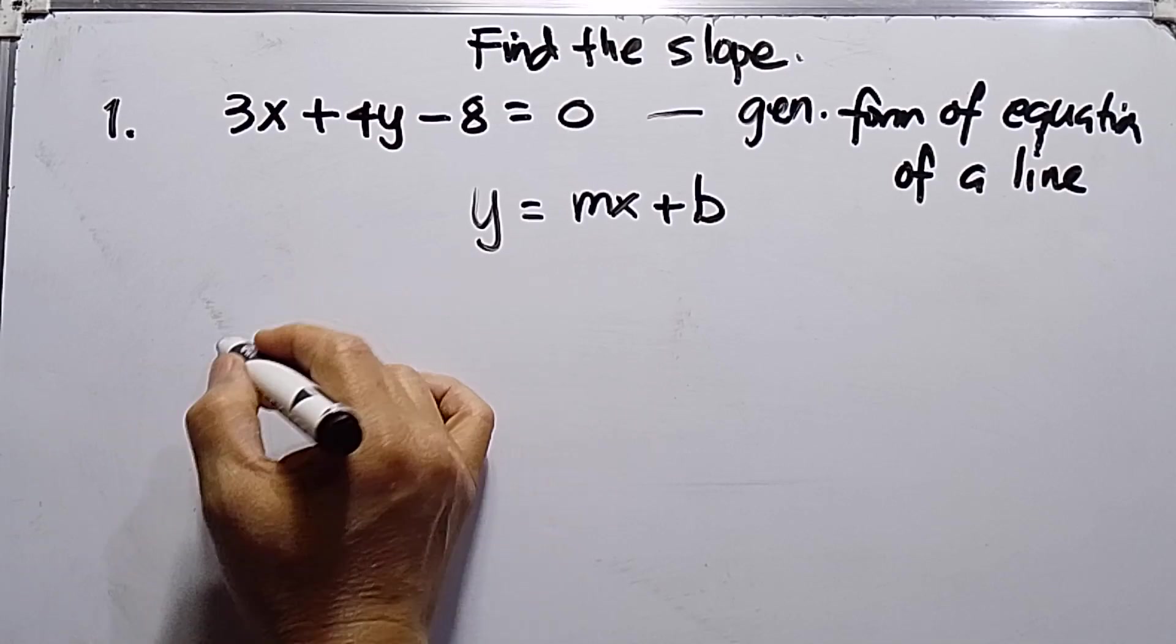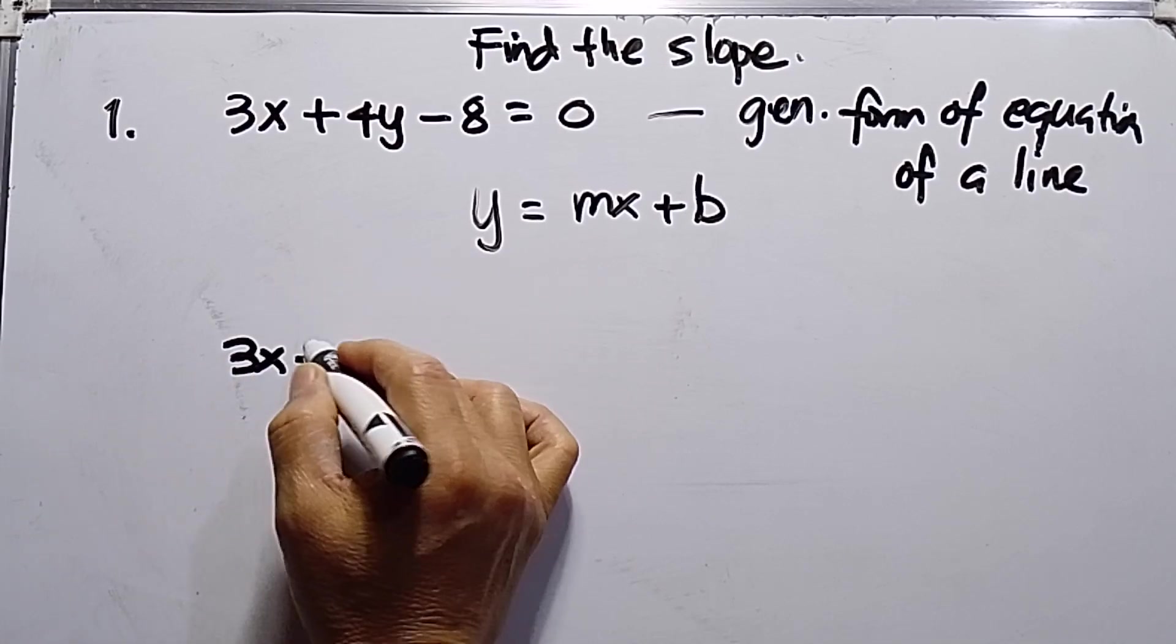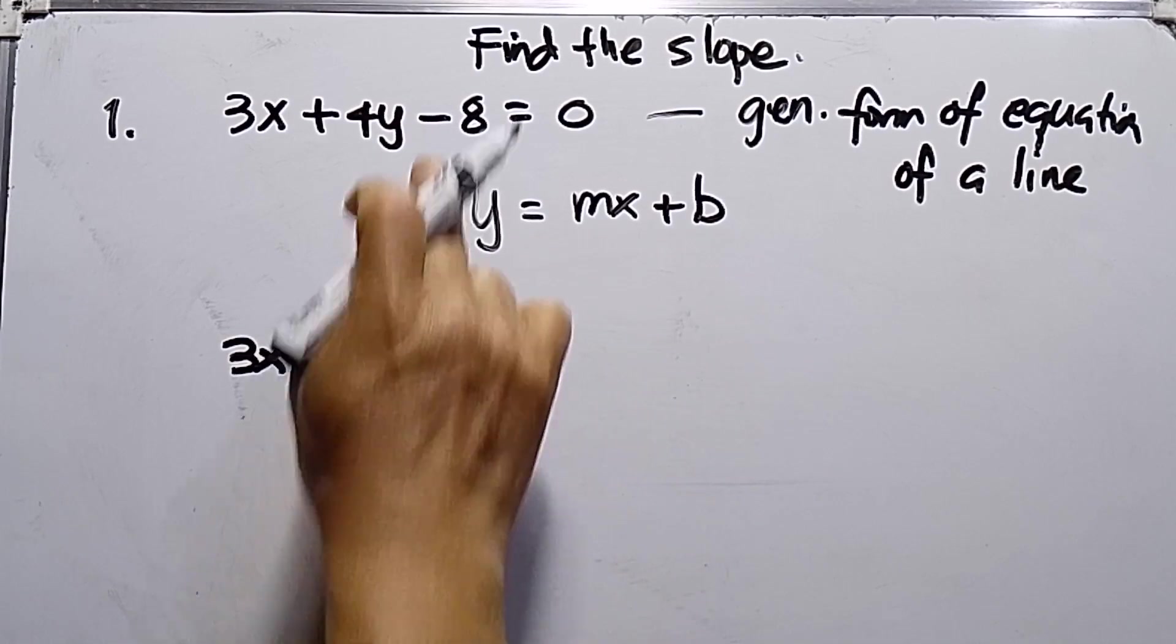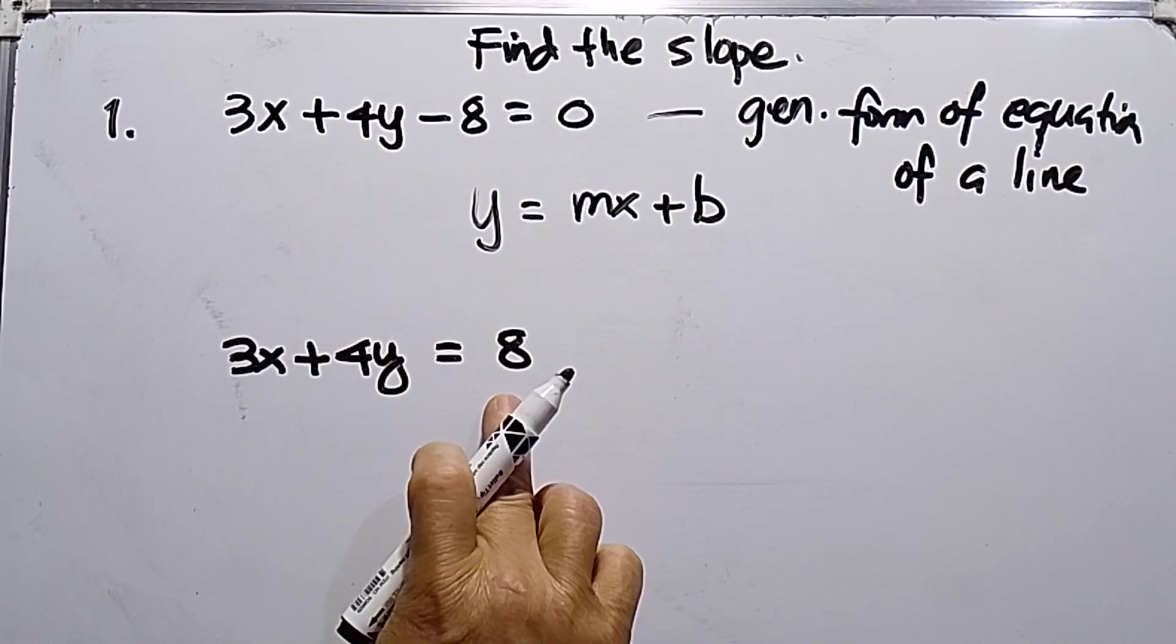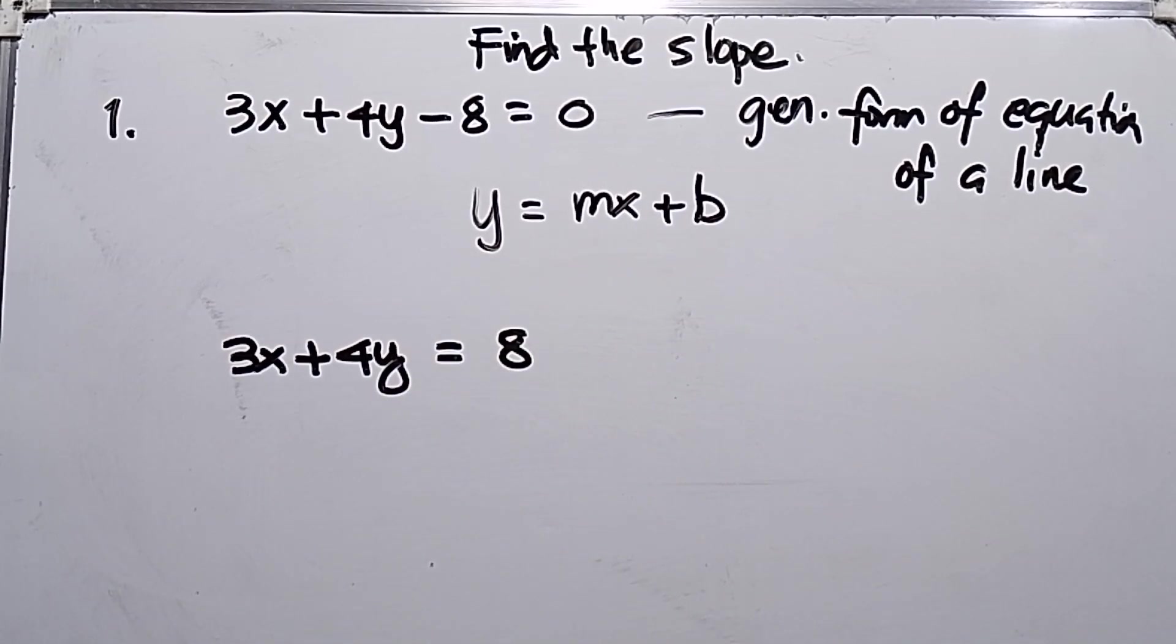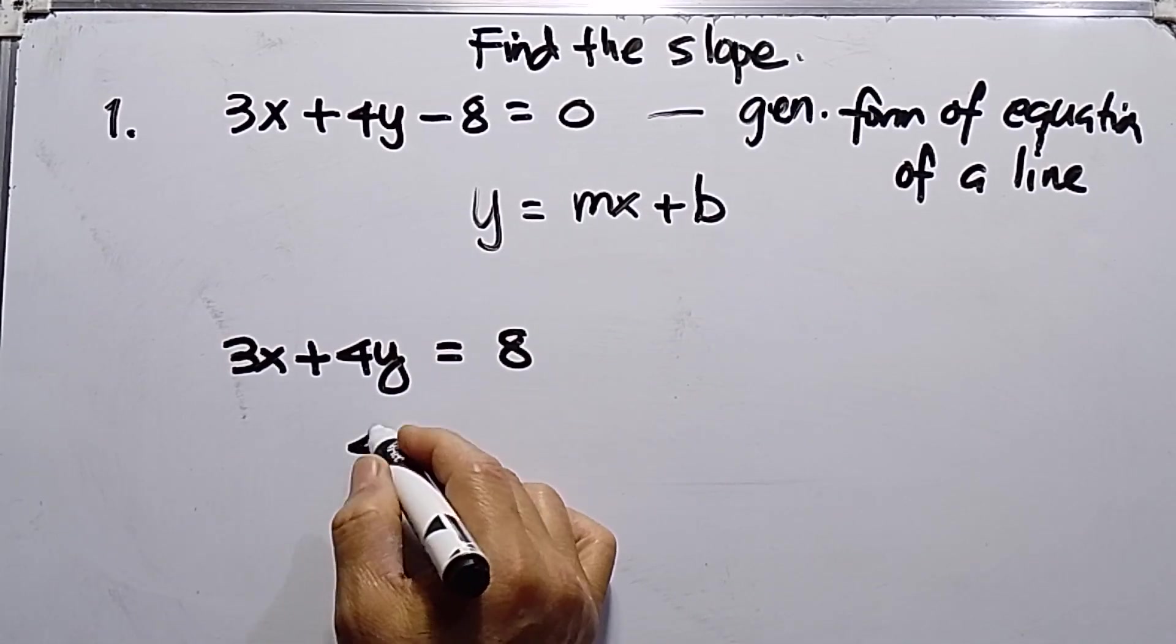So this will be 3x plus 4y equals 8. I just moved the negative 8 to the right, which becomes positive 8. Then to solve for slope-intercept form, this will be 4y equals...